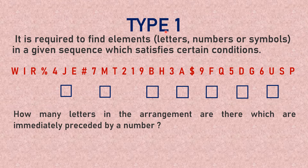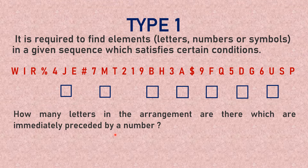In Type 1 questions, you are given a sequence with elements and you have to find the element which satisfies a particular condition. For example: how many letters in the arrangement are immediately preceded by a number? Some key terms to know: 'preceded' means what comes before, 'succeeded' means what comes after, vowels are the letters A, E, I, O, U, and consonants are all other letters.